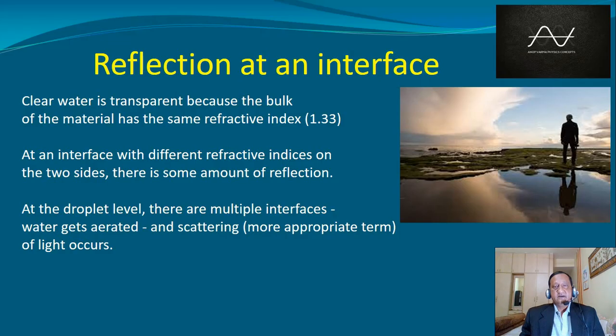And there are multiple layers of water that are flowing over each other in a random manner. They create multiple interfaces. At each of these interfaces, there is some amount of reflection and these reflected rays are not parallel. The right term to use for this kind of reflection is scattering.